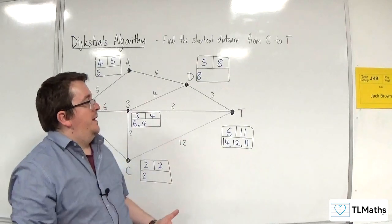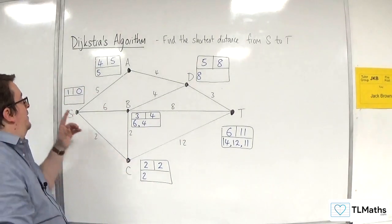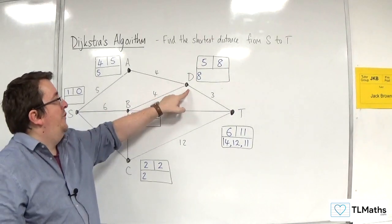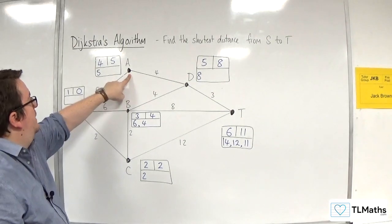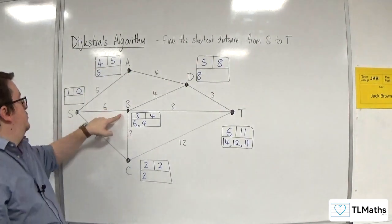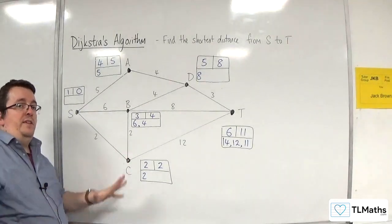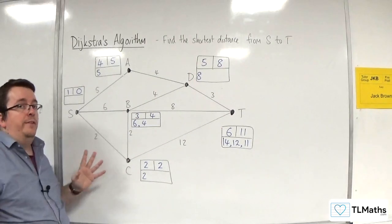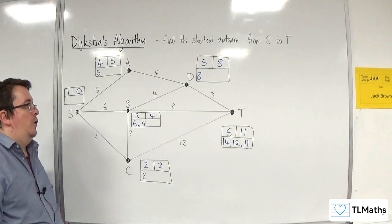Now, what's convenient about Dijkstra's algorithm is it also tells you the shortest distance from S to D, which is eight, and the shortest distance from S to A is five, and the shortest distance from S to B is four, and the shortest distance from S to C is two. So it actually tells you the shortest distance from S to all of the other vertices. So it's a really convenient thing to know.